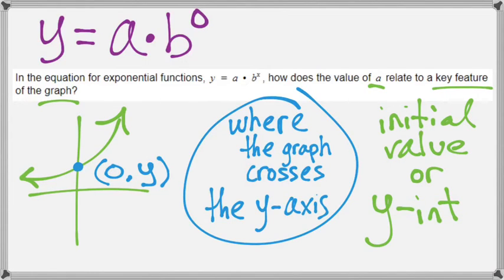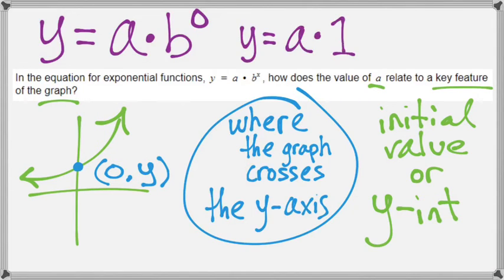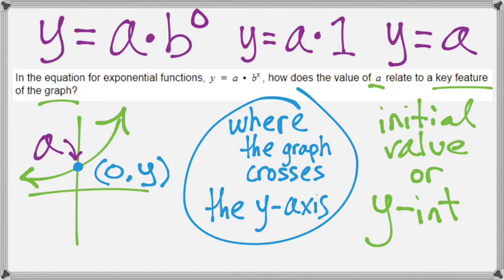Just a side note: the y-intercept always has an x-value of 0. Algebraically, when you plug in an exponent equal to 0, anything to the power of 0 is rewritten as 1. So b to the power of 0 just becomes 1, and then a times 1 is simply a — which is your initial value. The value of b goes away because b to the power of 0 became 1, and 1 times anything is itself. So at the exact location of the y-intercept, b disappears and you are only left with a.